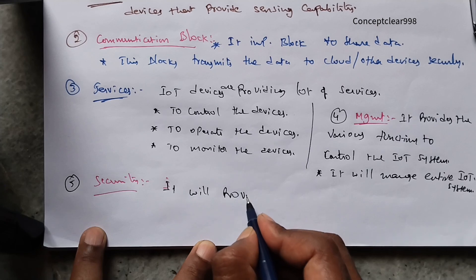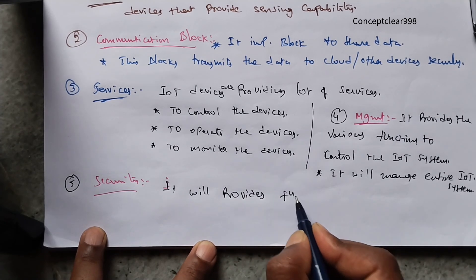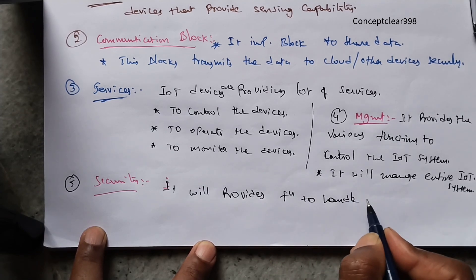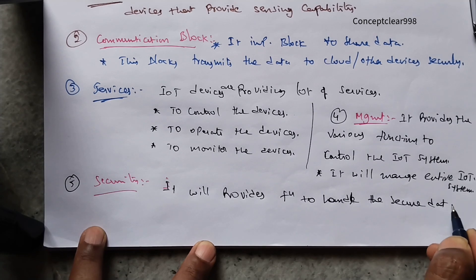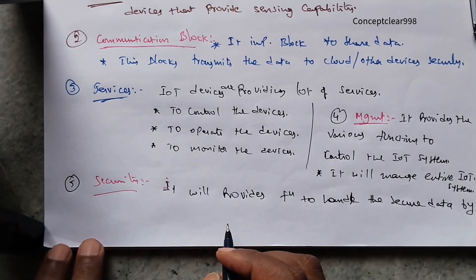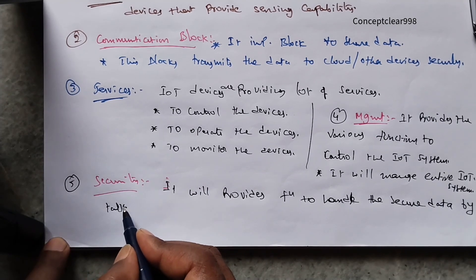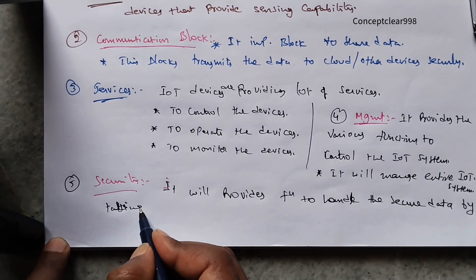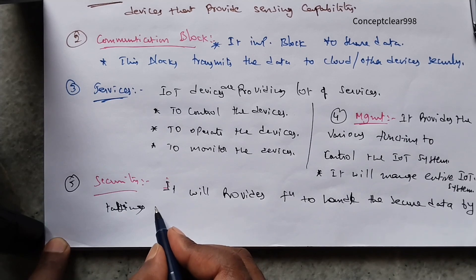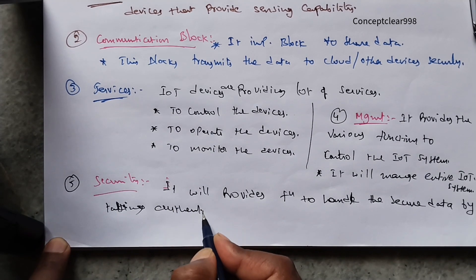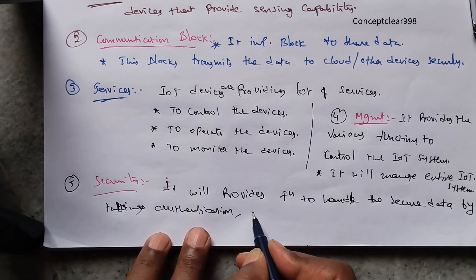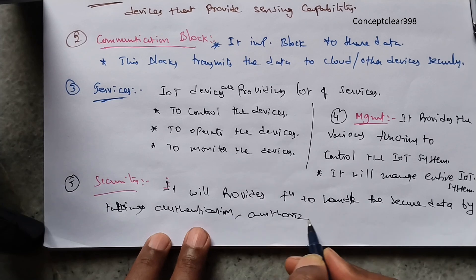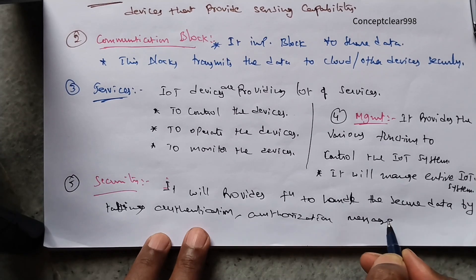The security block provides functions to handle secure data by taking authentication and authorization. Authentication refers to authorized users — for example, using a login user ID and password. Authorization ensures proper access control.